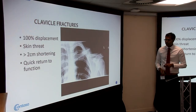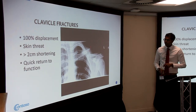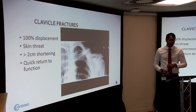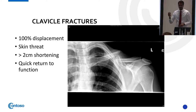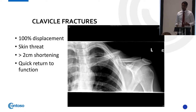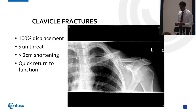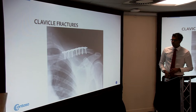If the clavicle shortens significantly, the arm becomes weaker because moment equals force times distance — reduced distance means reduced moment. If there is more than two centimeters of shortening, more than 100% displacement, or threat to skin — as you can see the sternocleidomastoid pulling that fragment up — these are indications for early surgery. Fixing the clavicle also gives a quicker return to function compared to six weeks in a sling.